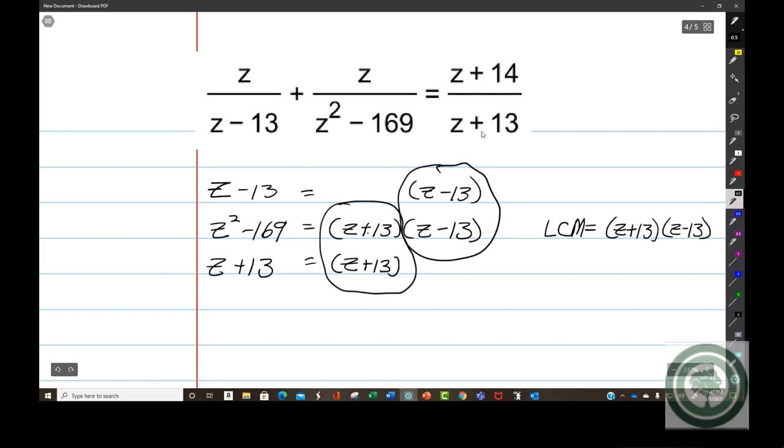Your LCM, your least common multiple or lowest common multiple, is going to be z plus 13, z minus 13. That's going to be used to cancel out all the denominators. Your first step is to write this, making sure your denominators are all factored. This is the only one that actually factors.